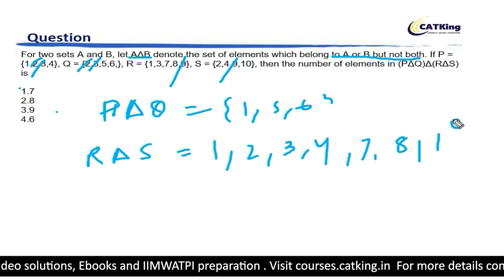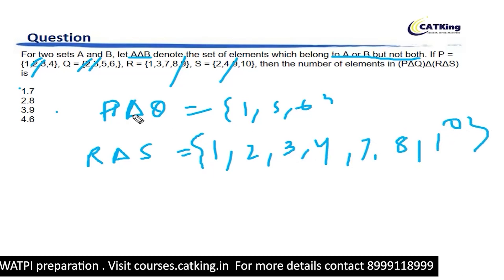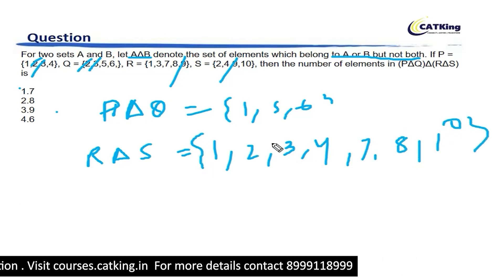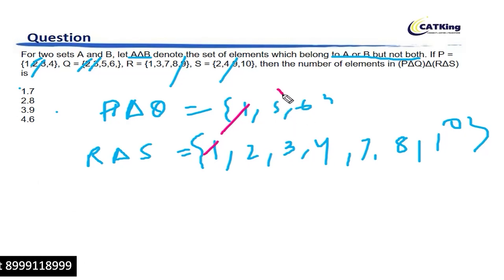Now we perform delta operation between P delta Q and R delta S. Let's see what's common - 1 is there. Besides I don't think there is anything else. So number of elements will be 1, 2, 3, 4, 5, 6, 7. Do we have to drop anything here?